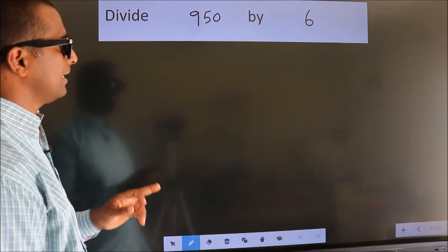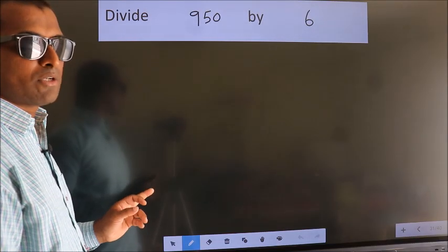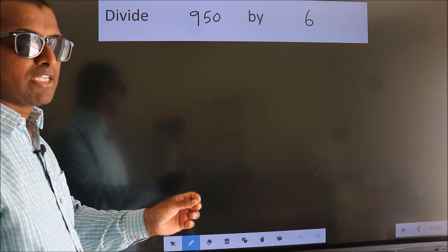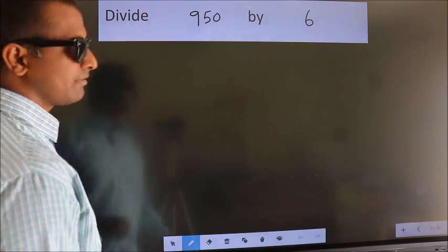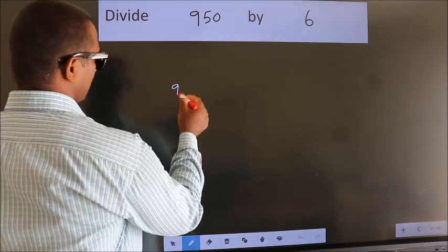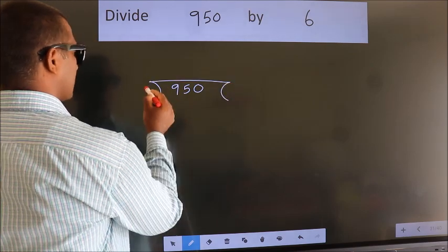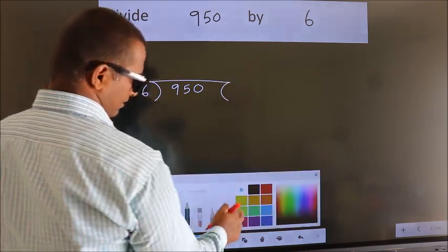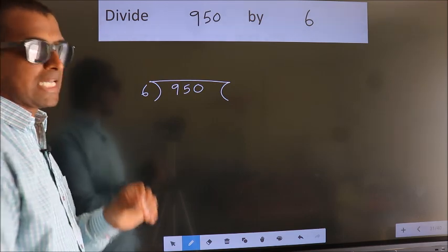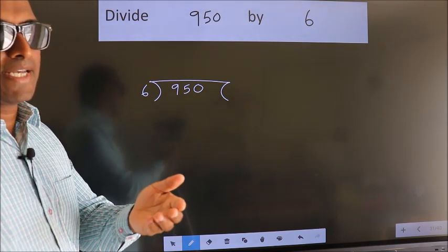Divide 9.50 by 6. To do this division, we should frame it in this way. 9.50 here, 6 here. This is your step 1.